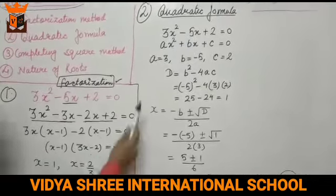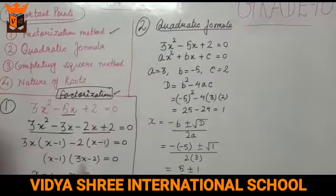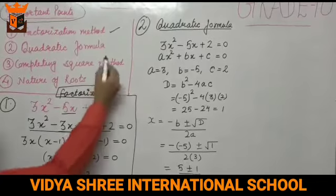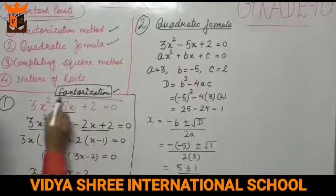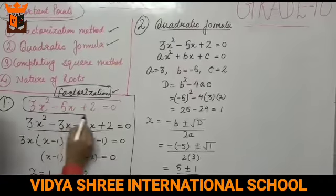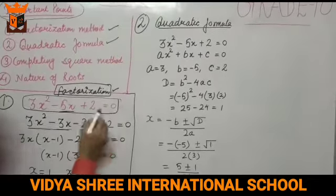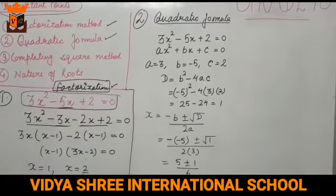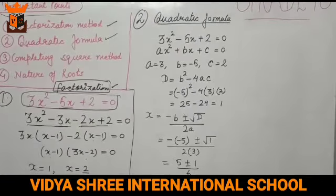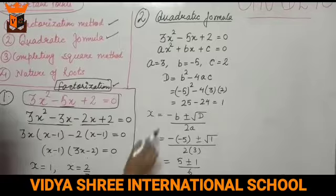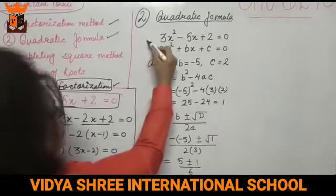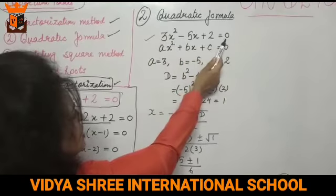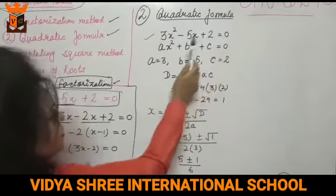Now we have the second method. First we discussed factorization. The second method is the quadratic formula. We will take the same equation and solve it by all three methods to verify that the answer is the same. So the equation is 3x squared minus 5x plus 2 is equal to 0.